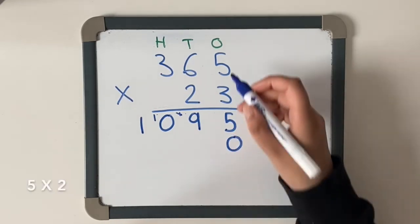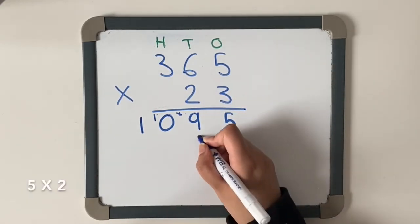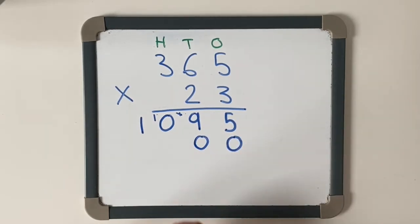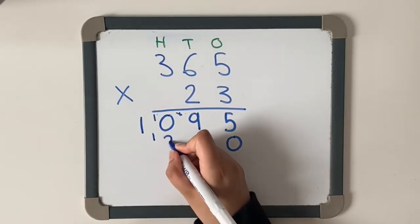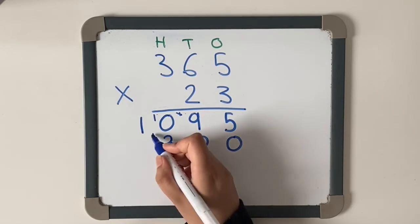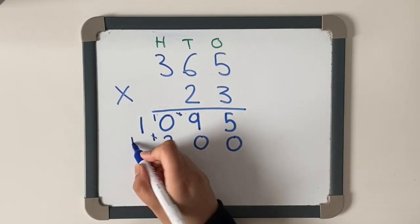We're going to do five times two which is ten. I'm going to put my zero there and carry the one across. Six times two is twelve, add the one which is thirteen. Put my one there and I'm going to carry on the one.